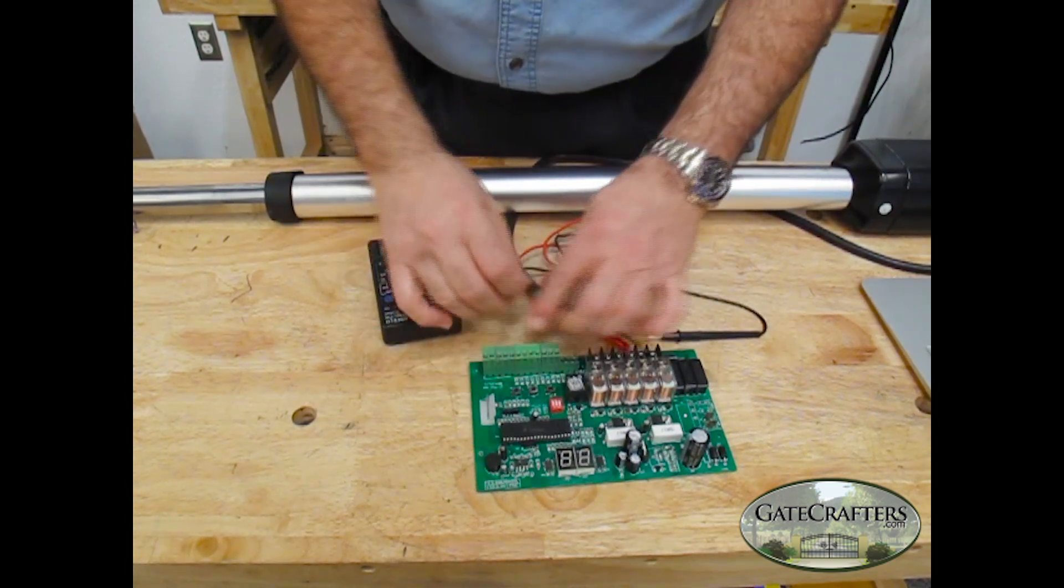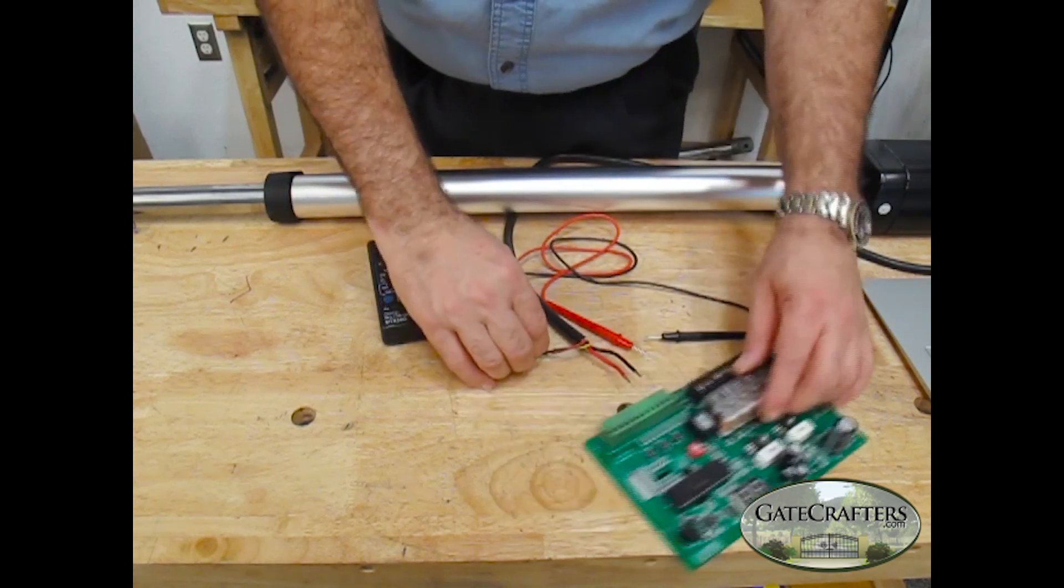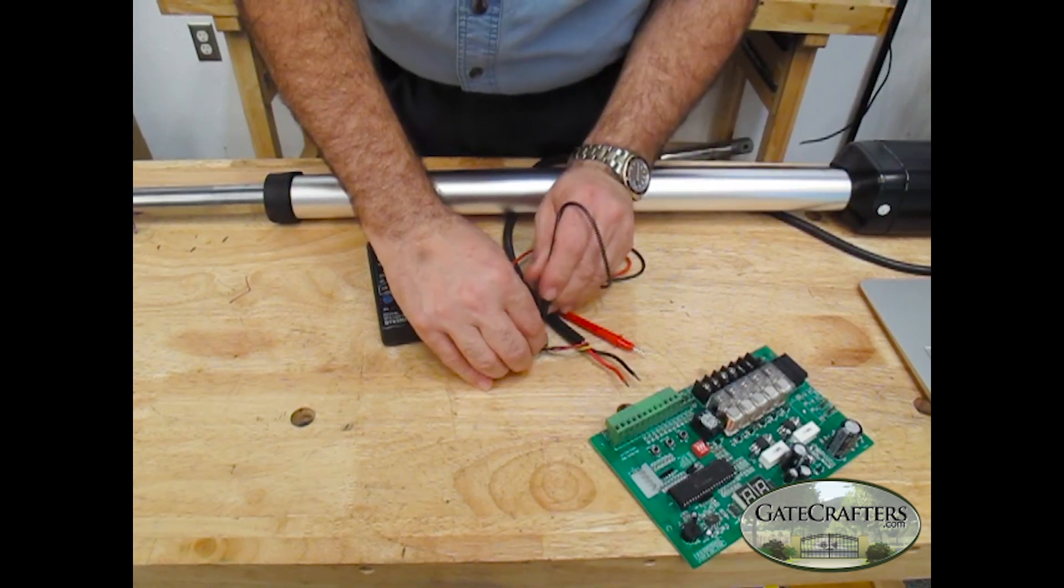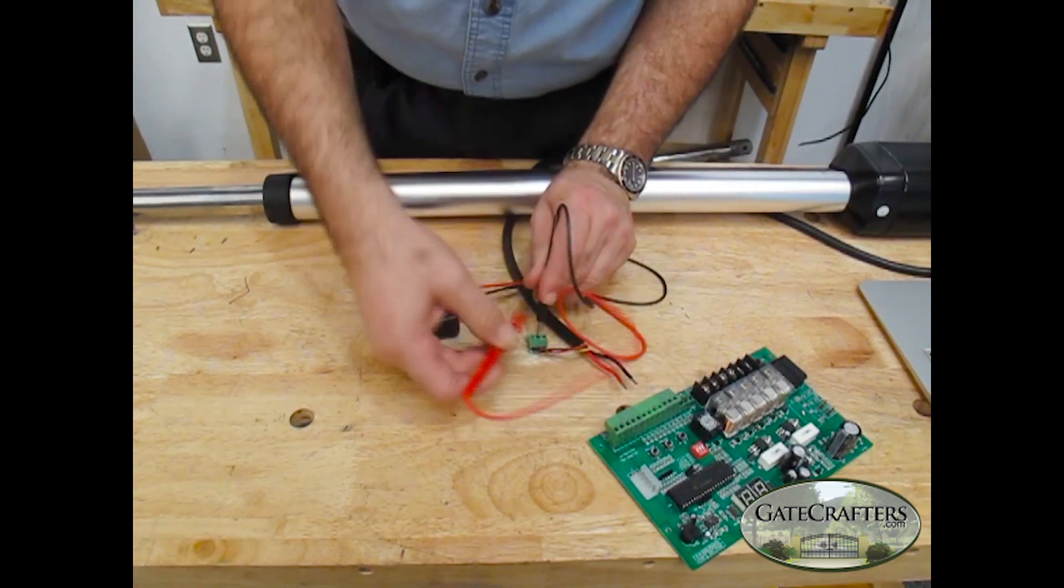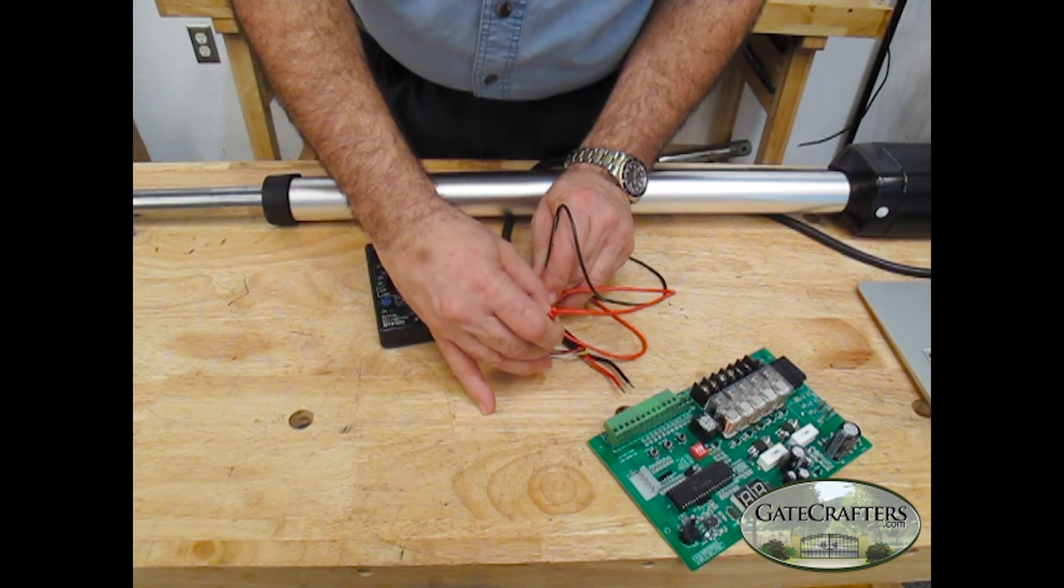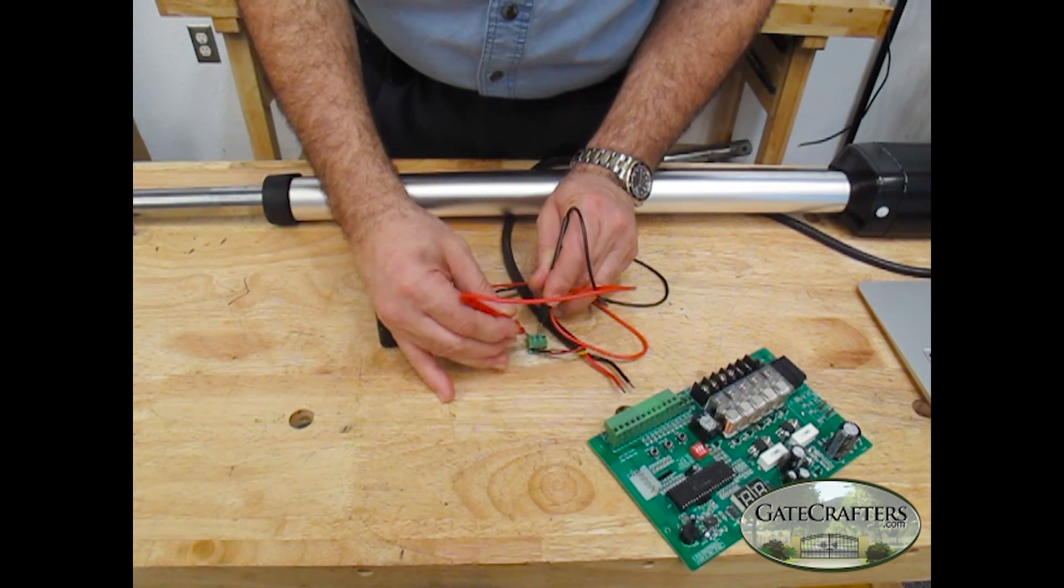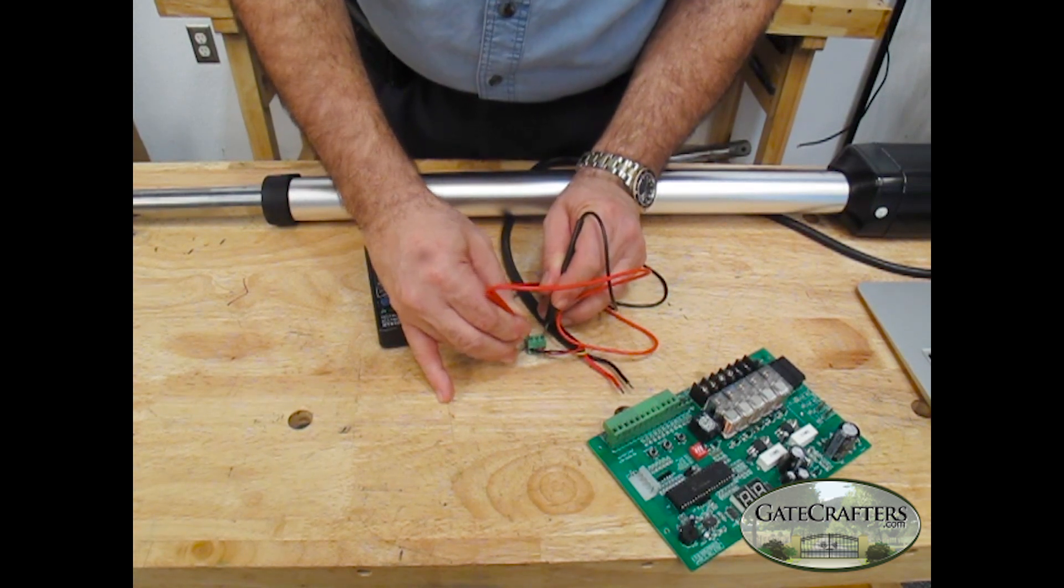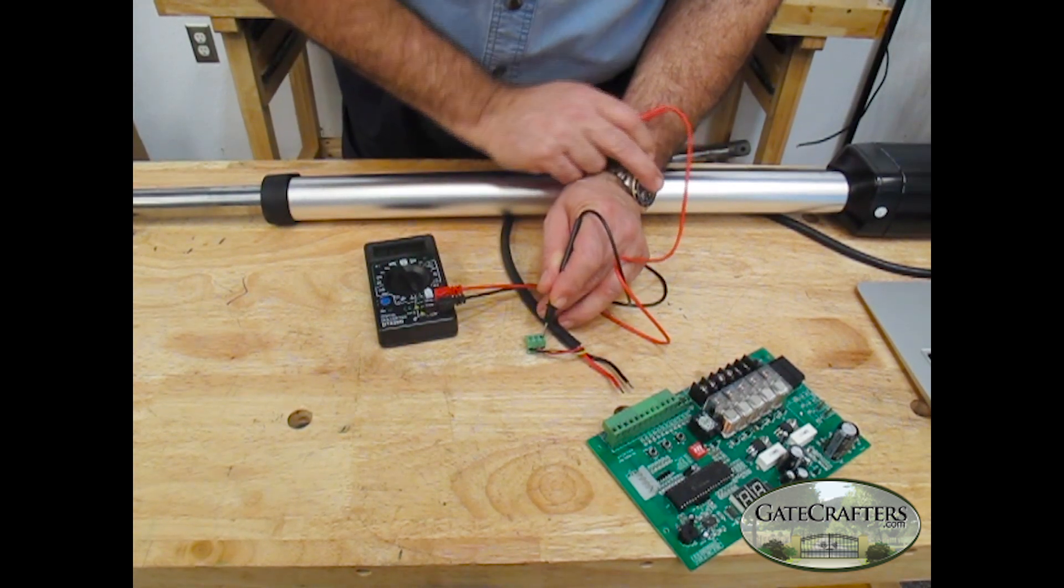Then unplug your limit switches from your gate opener control board. Hold it down with one probe and test the other two. When you get done with that, we want to test across. So we have continuity on all three of these.